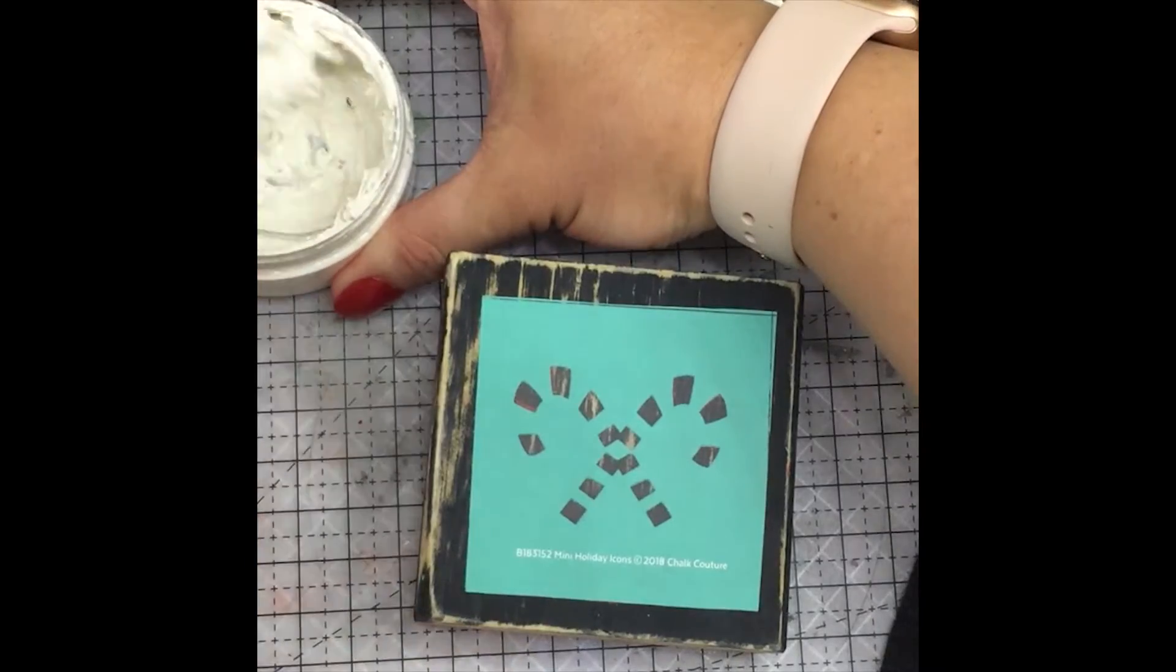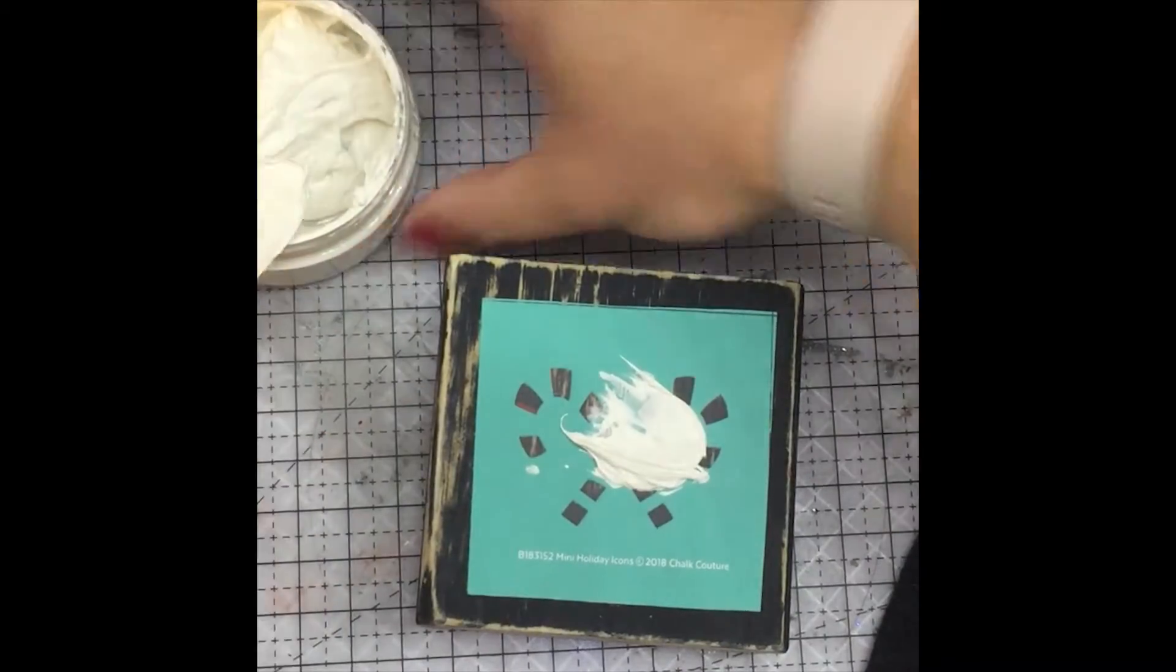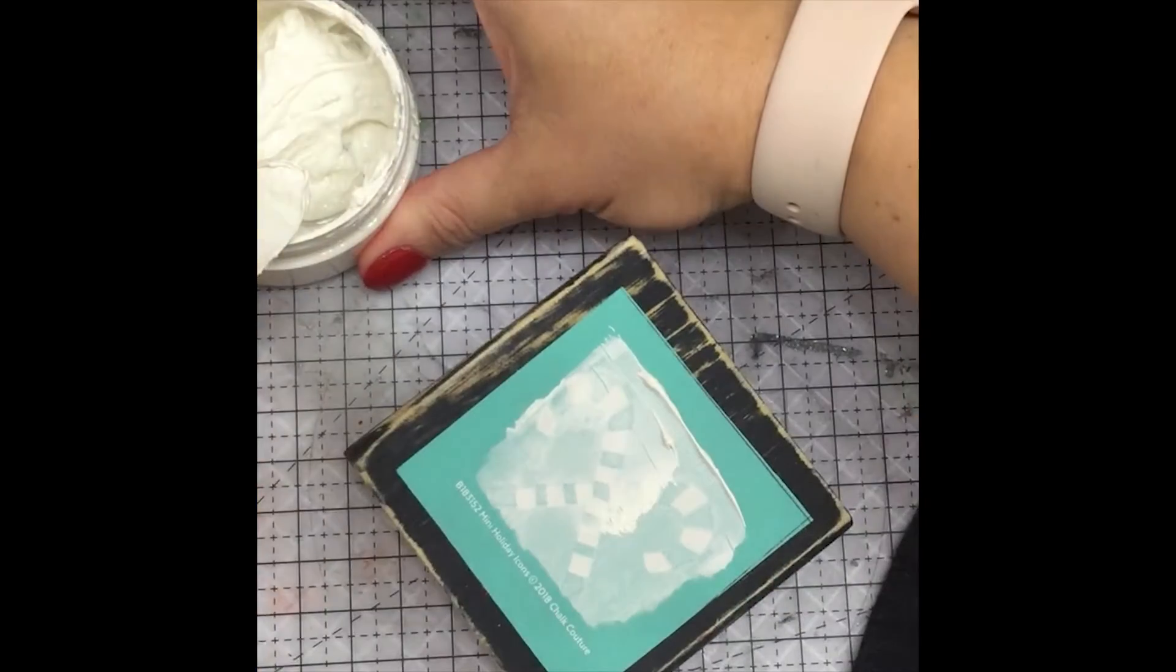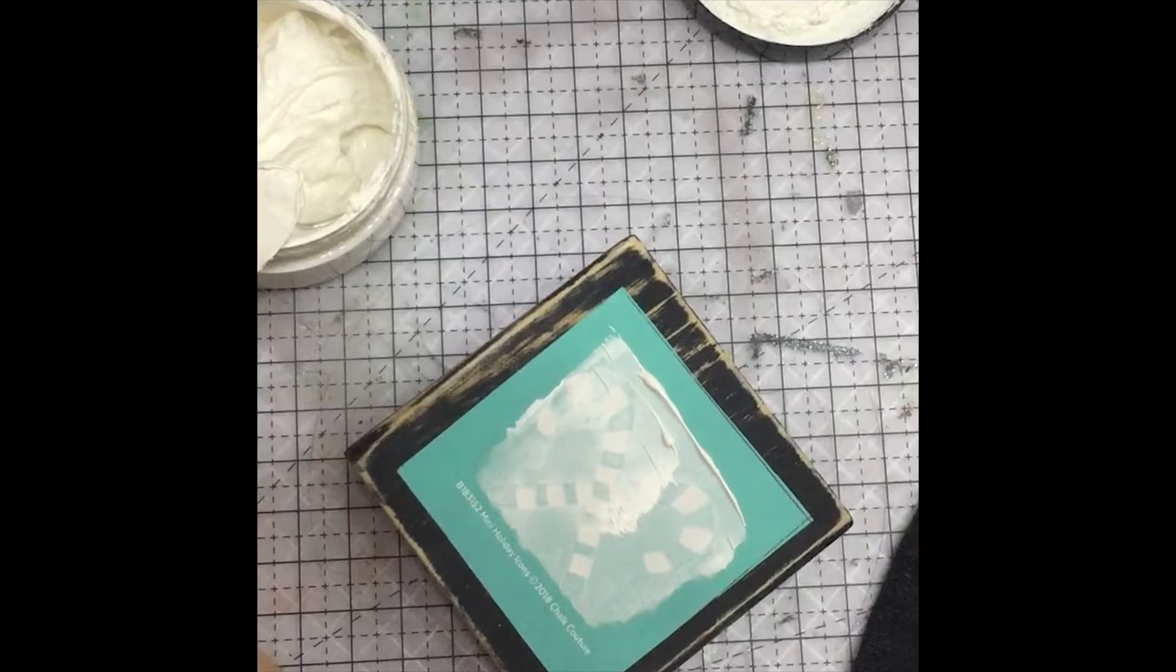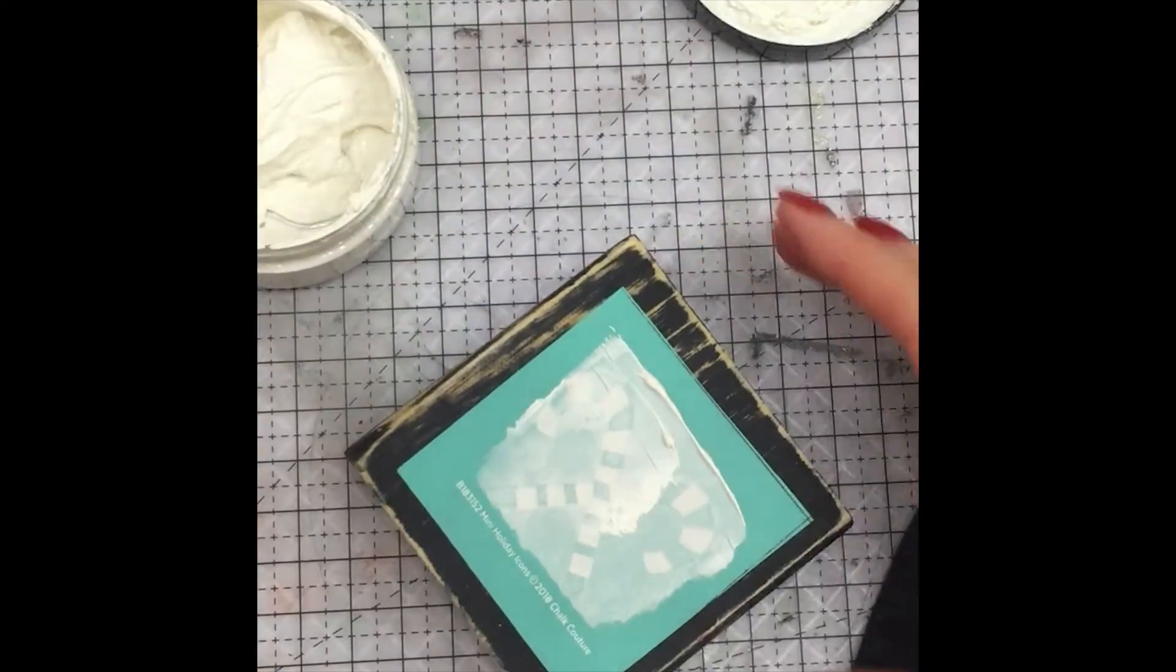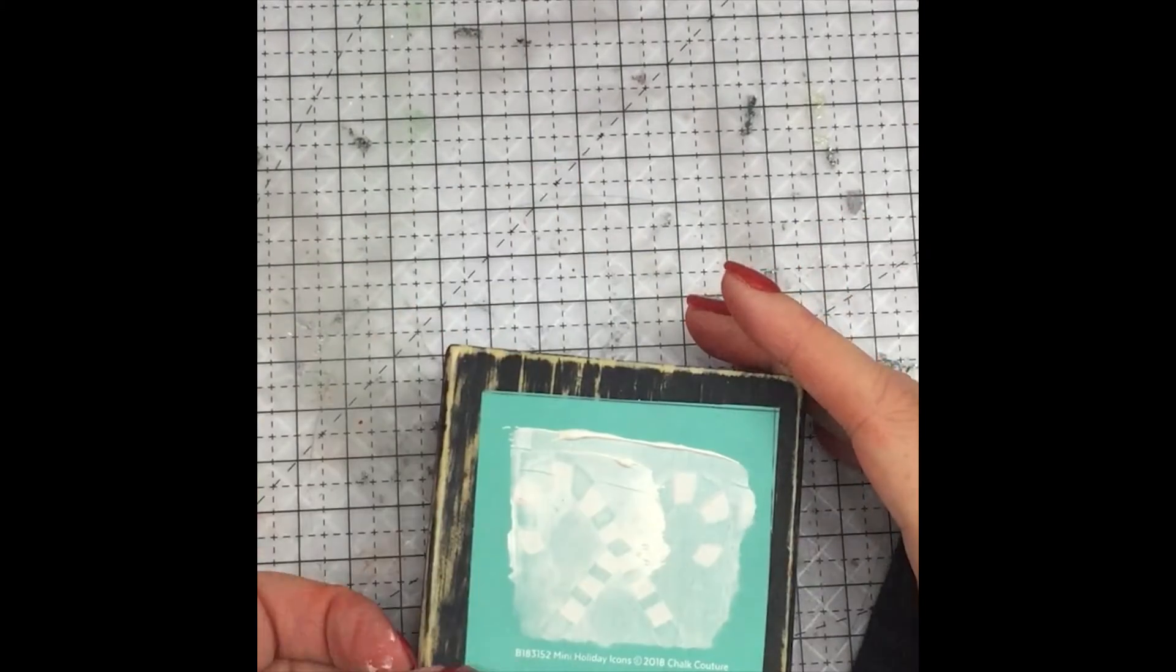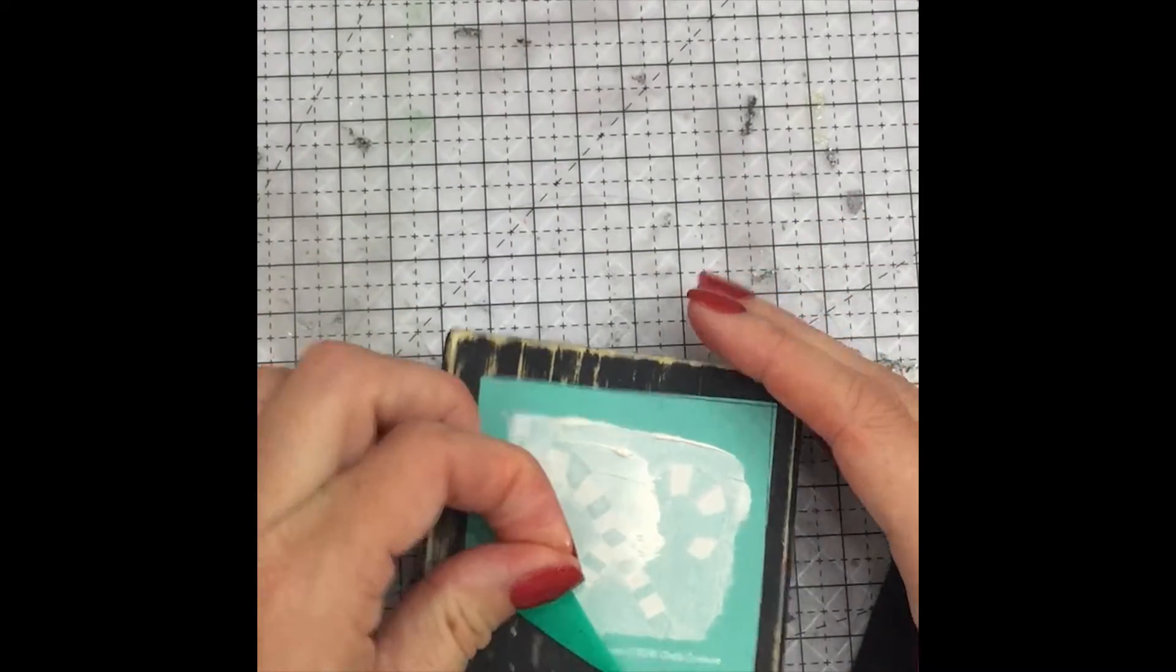So once again, I stir it up. If I need it to be a little bit more fluid, I can add some water just fine. It will not damper or hinder my product at all. I do want to try to get up as much of that chalk paste as I can after I lay it simply because I can reuse it and I want to get as much bang for my buck.